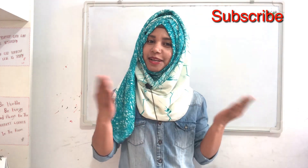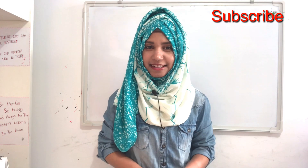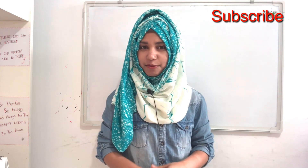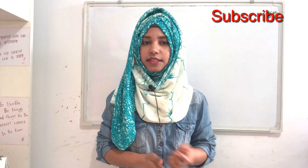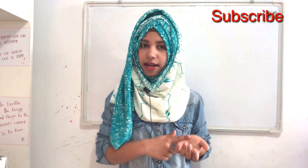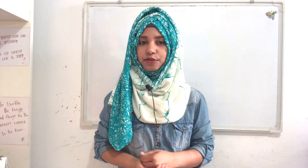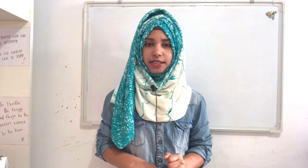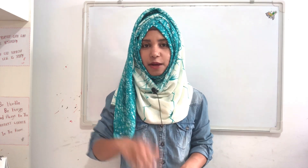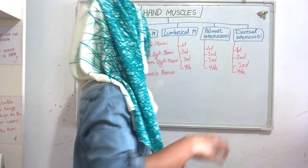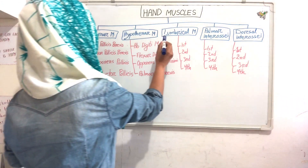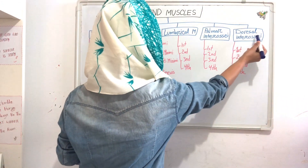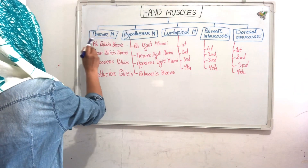Hey friends, Assalamualaikum, welcome back to my channel with me Shana Janat. Today I am going to discuss about hand muscles. Our hand muscles are also called intrinsic muscles because these are small muscles and their origin and insertion are both in the hand. In total we have 20 muscles in the hand. We can divide our hand muscles into five parts: thenar muscle, hypothenar muscle, lumbrical muscle, palmar interossei, and dorsal interossei.